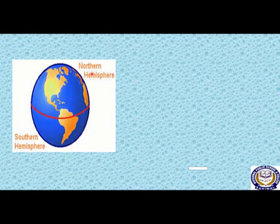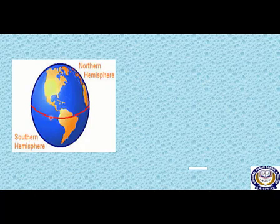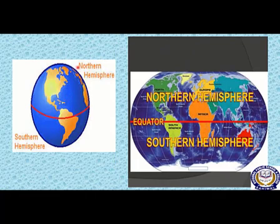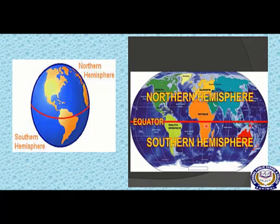Let us define hemisphere. Any circle drawn around the Earth divides it into two equal halves called hemispheres. The two hemispheres are the northern hemisphere and the southern hemisphere. The equator, or the line of zero degrees latitude, divides the Earth into the northern hemisphere and the southern hemisphere.